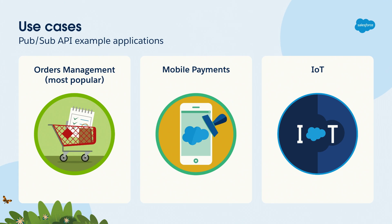A real use case we had a couple of projects ago was implementing native mobile payment features, where Google and Apple servers were notifying Salesforce when a payment was captured, and the mobile application server was also notifying Salesforce. Since we didn't know which event would come first, we shifted the responsibility to Salesforce to manage and decide, after both events arrived, which one to process and how to continue. Moving into IoT, the possibilities are endless because you have many devices that can publish data in real time for monitoring, customer support, or sales.